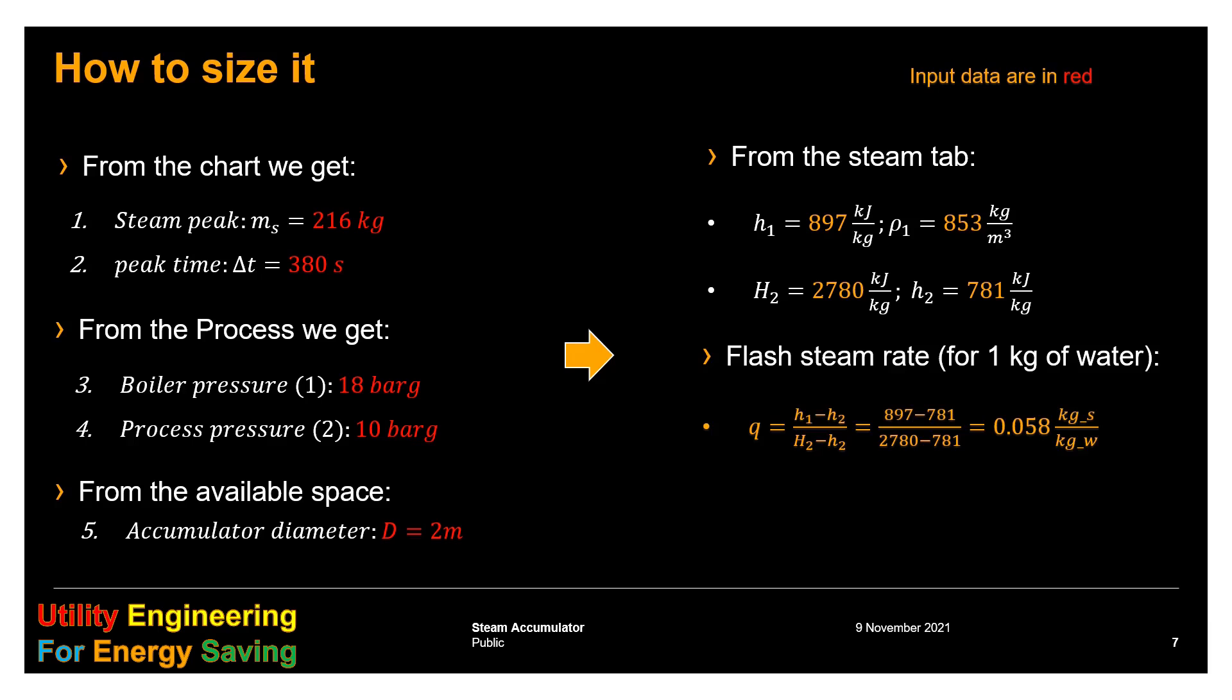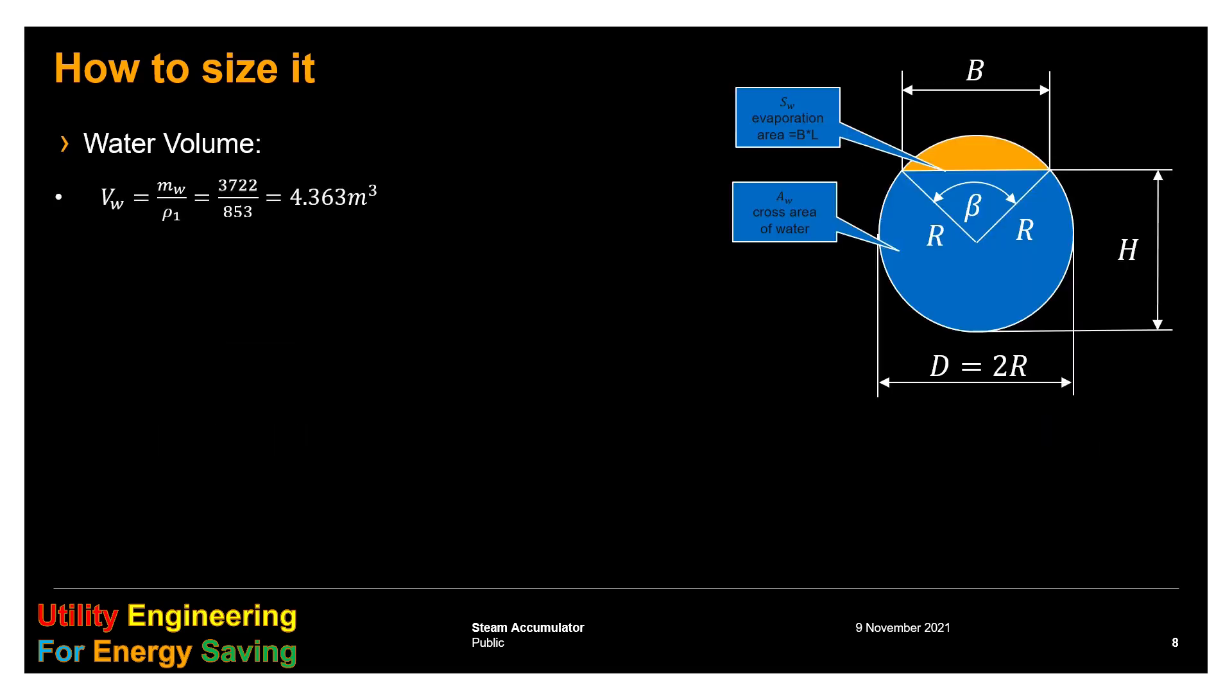Then we can calculate the flash steam rate corresponding to 1 kg of water q, that is 0.058 kg of steam per kg of water. Therefore the amount of water is the peak steam divided by q, which is 3722 kg. The water volume is the mass of water divided by its density at high pressure, that is 4.363 cubic meters. The tank volume, considering a maximum filling up to 90%, is that volume divided by 90%, which we can approximate at 5 cubic meters. The length of the tank is its volume divided by the cross area. Since we know the diameter, we know the area. The length is therefore 1.60 meters.